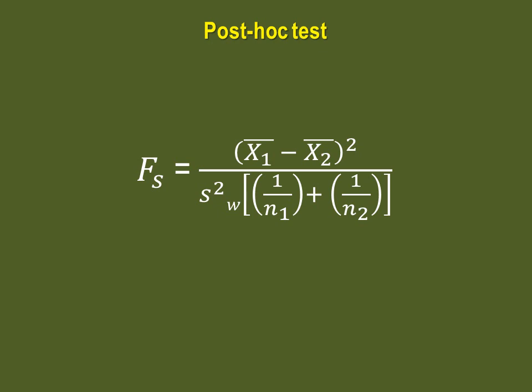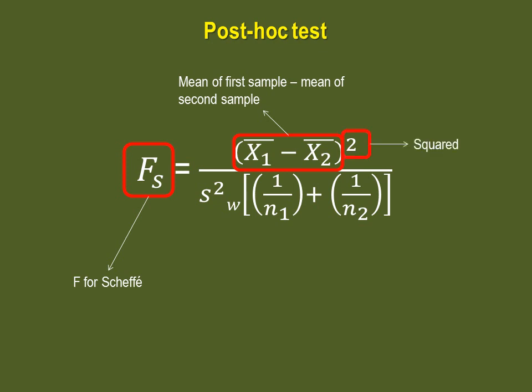The Scheffé test is based on F values. The numerator is the difference between the means of your samples, squared. To get the denominator, take the within-group variance that you calculated when doing the ANOVA, and multiply that by 1 over your first sample n plus 1 over the second sample n.